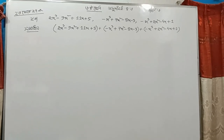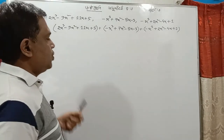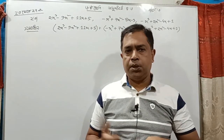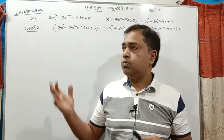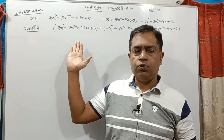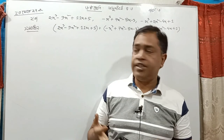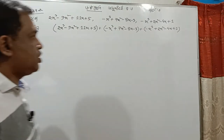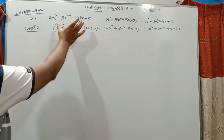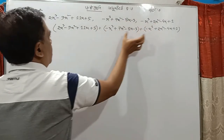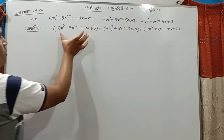We have done the class in 4.3. We have done the link in the description box. We have said that we have done the line. We have done the line.